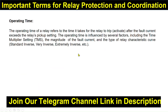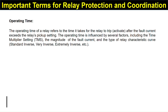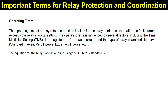Operating time refers to the time it takes for a relay to trip after the fault current exceeds the pickup setting. The operating time is influenced by several factors including the time multiplier setting, the magnitude of fault current, and the type of relay characteristic curve. There are four characteristic curves: standard inverse, very inverse, and extremely inverse.